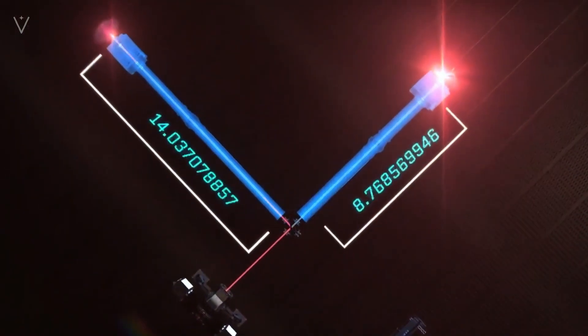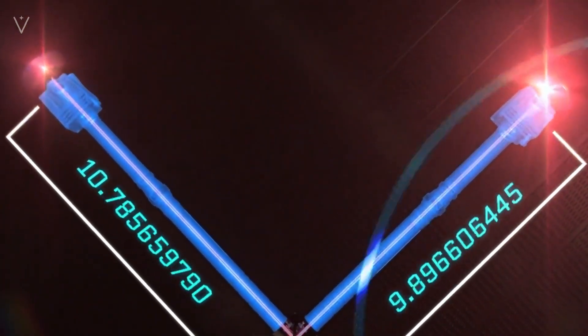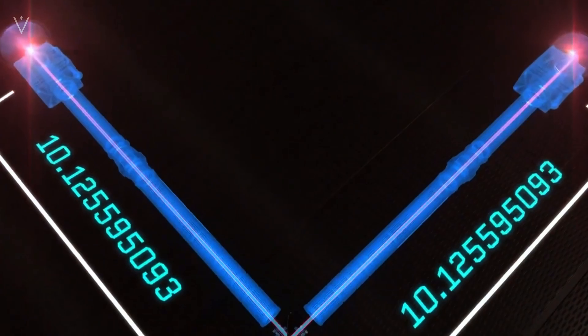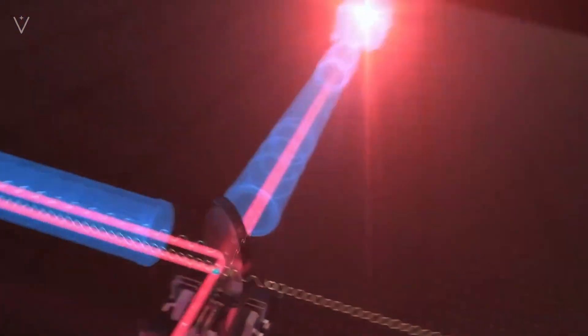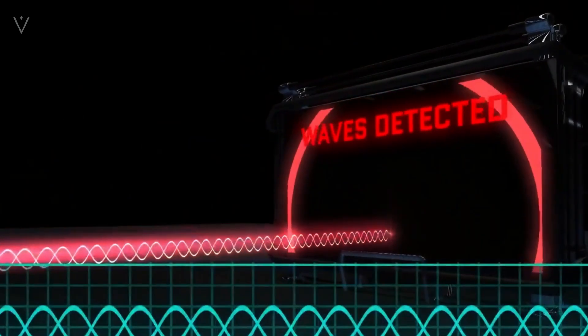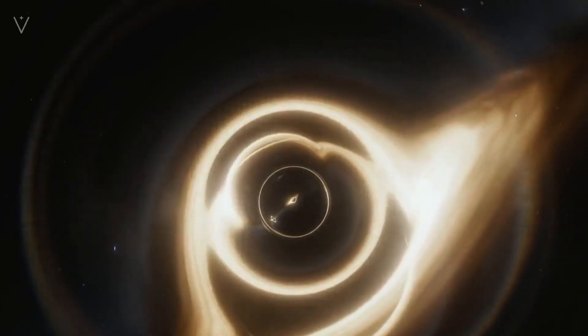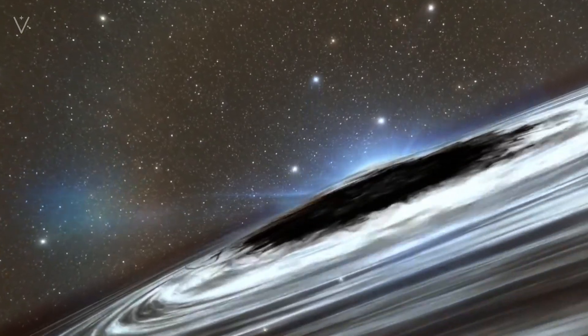The source of gravitational waves is very far away from the Earth. When they reach the Earth, they have become very weak. The deformation effect is only less than 10 to the minus 21 times, which is equivalent to the change in the width of a human hair between the Earth and Alpha Centauri, which is 4.3 light-years away. Therefore, it takes extremely high-precision experiments to verify gravitational waves.